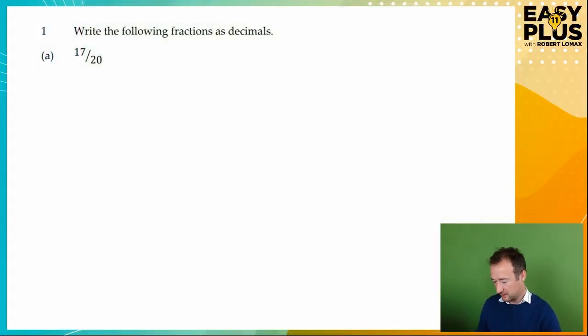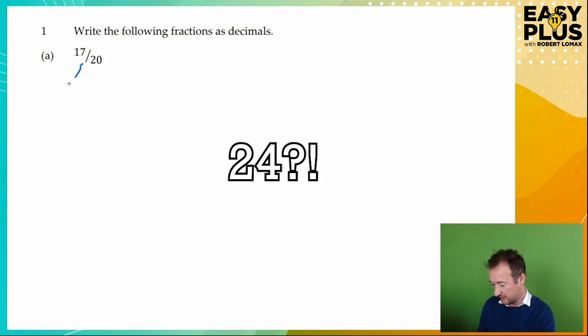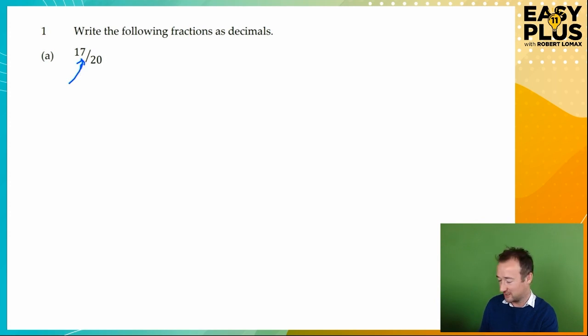Right, let's get started. Write the following fractions as decimals. So here we've got 17 over 20, and remember that this line here, which is technically known as a vinculum, but we can call it a fraction bar or division bar, means divided by.